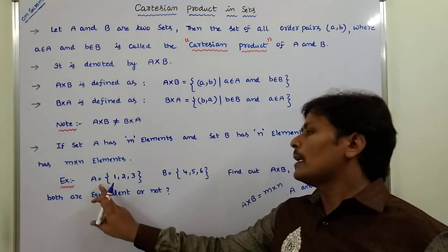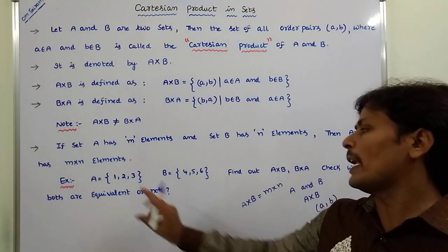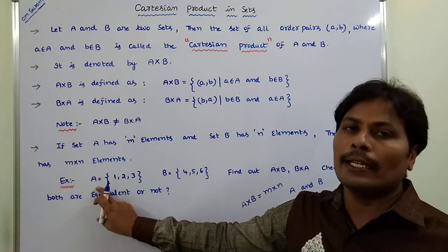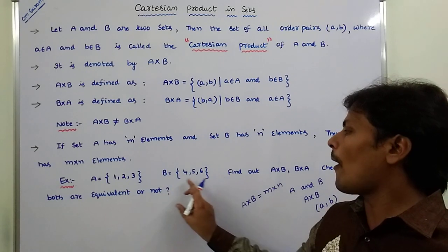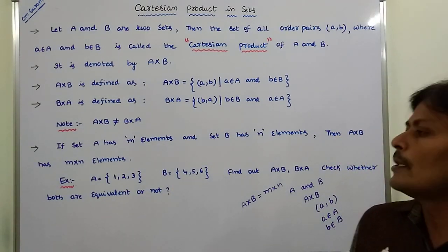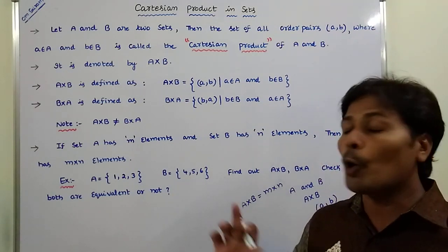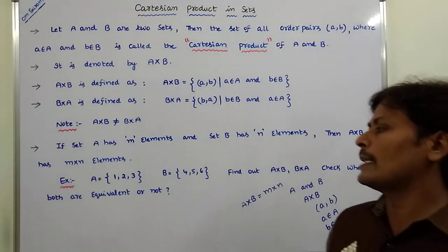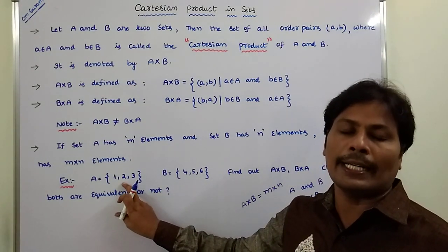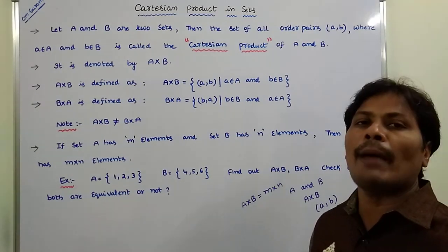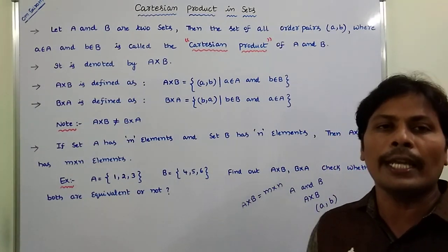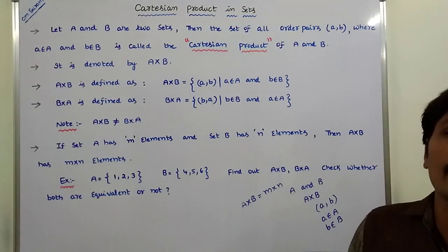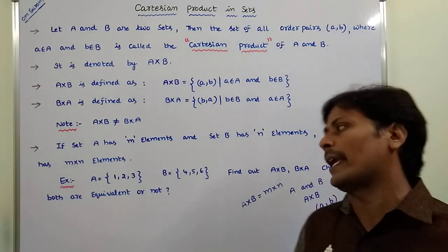For example, A is equal to the set {1, 2, 3} and B is equal to the set {4, 5, 6}. The size of set A is 3 and the size of set B is also 3. So how many ordered pairs are present in A cross B? That is M into N, which is 3 into 3, so 9 ordered pairs are present in A cross B.